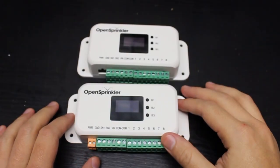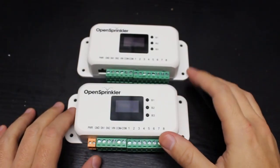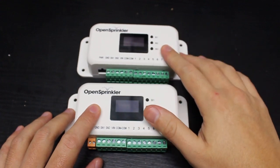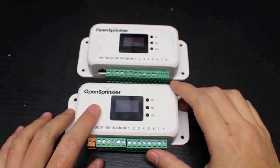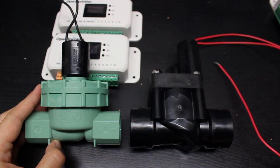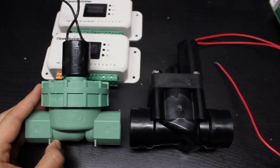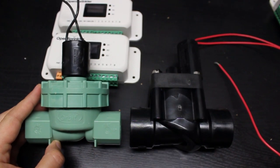We often get questions about the differences between the AC powered and the DC powered OpenSprinklers and how to choose between them. The short answer is that both of them are designed to operate 24 volt AC sprinkler valves like these which you may find in a typical sprinkler system.